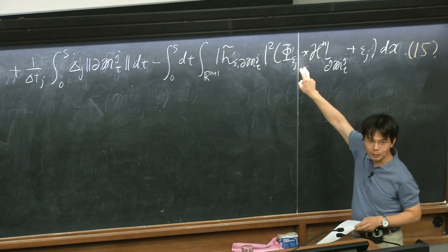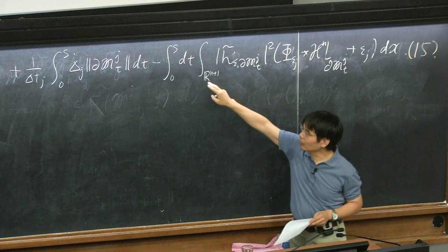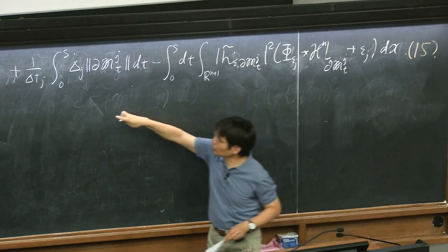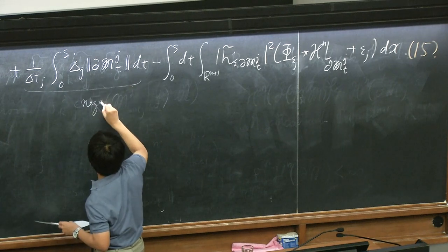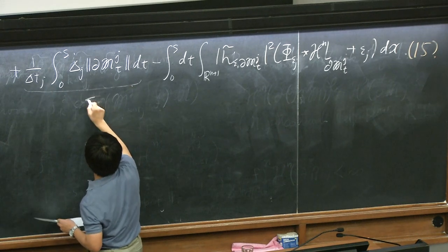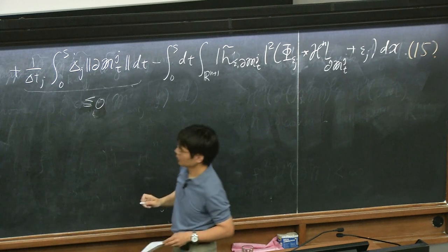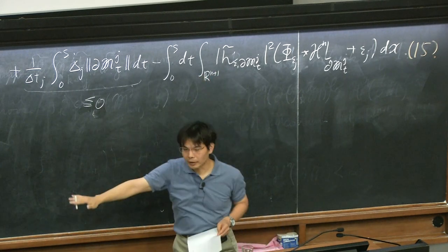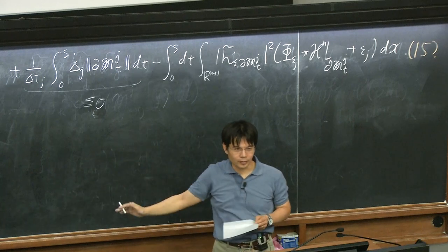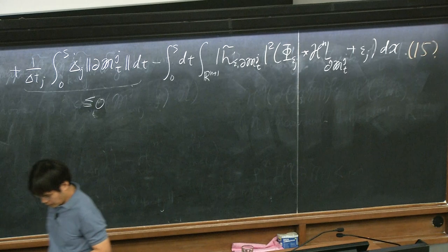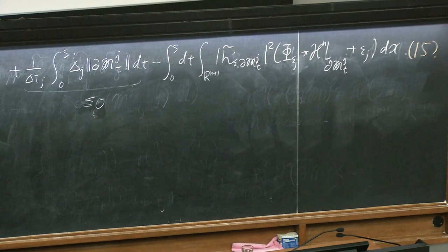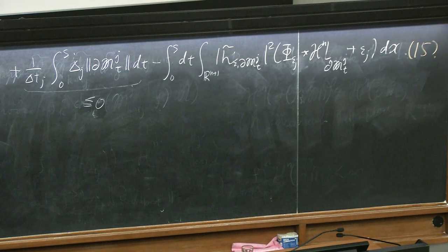The δ_j terms are negative (or ≤ 0), so you can move them to the left side and get an energy estimate. That's the construction and the energy inequality.